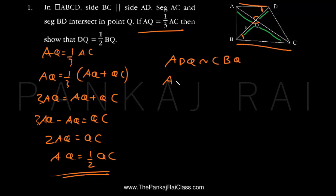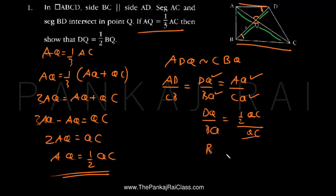Since the triangles are similar, AD upon CB equals DQ upon BQ equals AQ upon CQ. Therefore, DQ upon BQ equals AQ upon CQ, which gives us DQ equals 1/2 BQ.